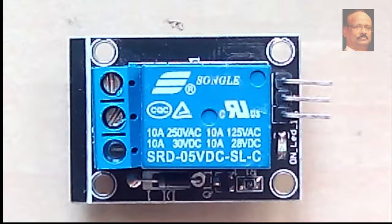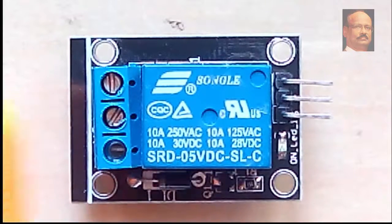In order to understand which one is normally open and which one is normally closed, that is which one is NO and which one is NC, we can use a meter.